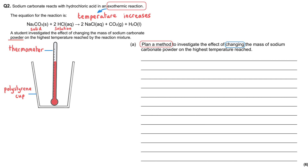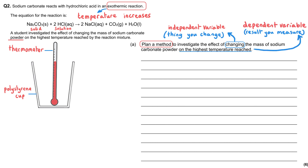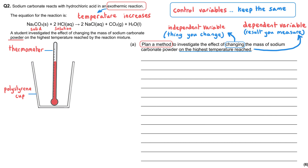We've been told we're investigating the effect of changing the mass of sodium carbonate powder — this is the independent variable. The effect on the highest temperature reached is the dependent variable. There is obviously a third type of variable: control variables, which are things we need to keep the same.